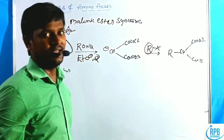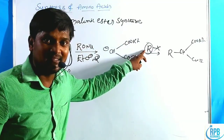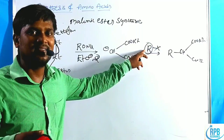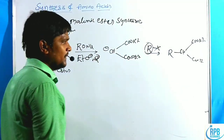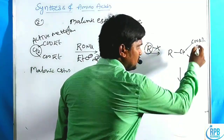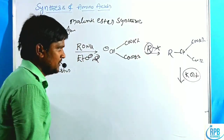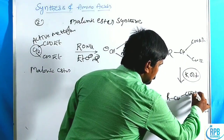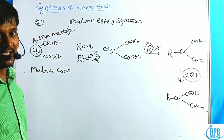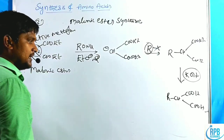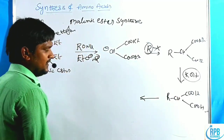A new C–C single bond is formed introducing the R group. If R = methyl, we eventually get alanine. Upon hydrolysis under basic medium, we obtain R–CH(COOH)₂, a beta-dicarboxylic acid (malonic acid derivative).